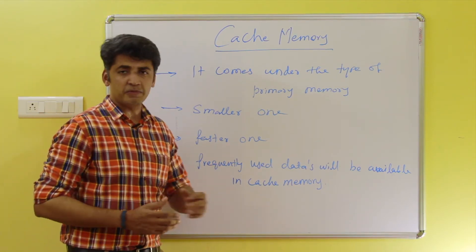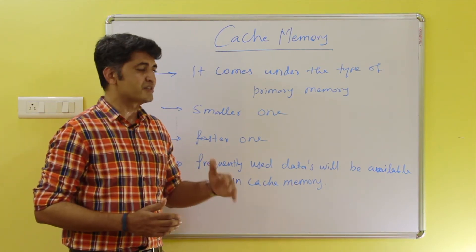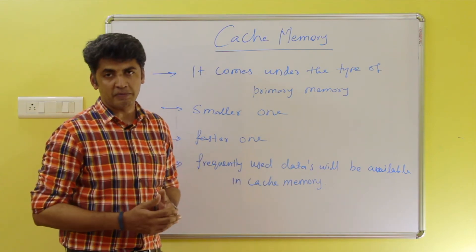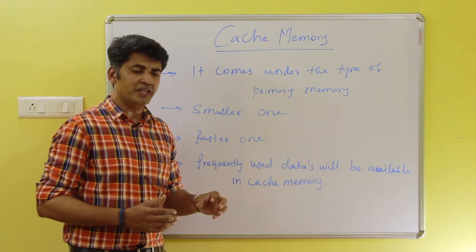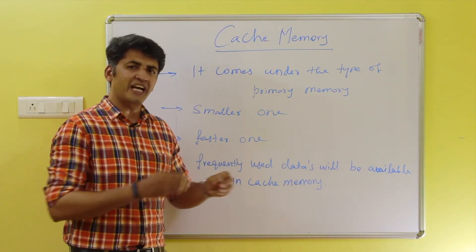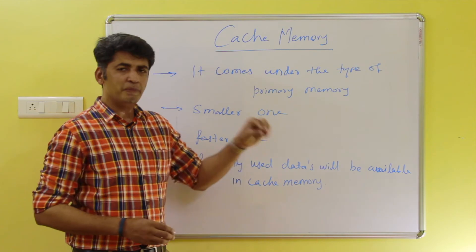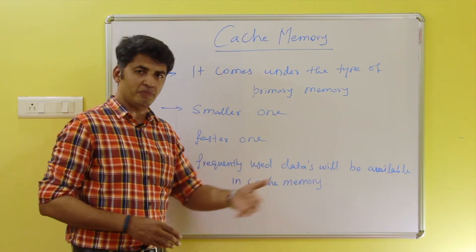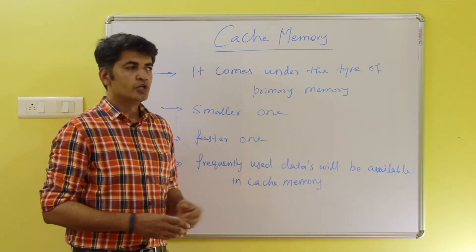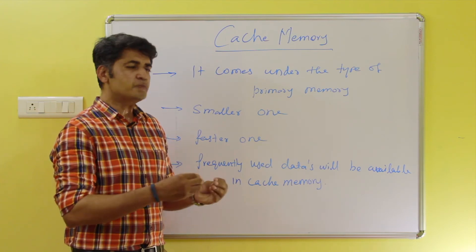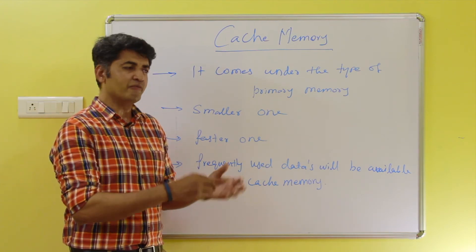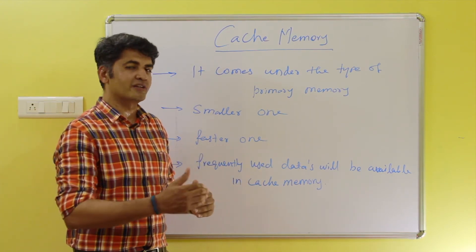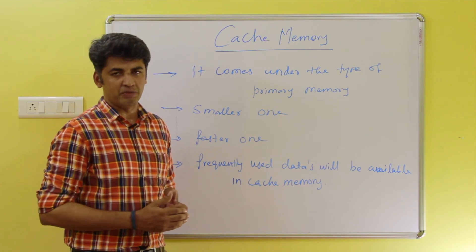There are two types of cache memory. One is on-chip cache memory and the second one is off-chip cache memory. On-chip cache memory is placed inside the processor. Off-chip cache memory is placed on the motherboard, and that is called off-chip cache memory.